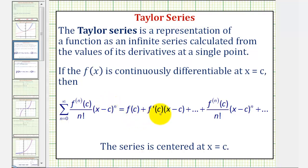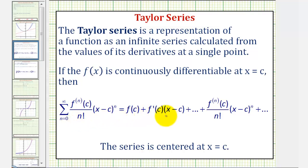Notice how the first two terms don't have a denominator, and that's just because when n is zero, we'd have zero factorial in the denominator, which is one, and then when n is one, we'd have one factorial in the denominator, which is also one.